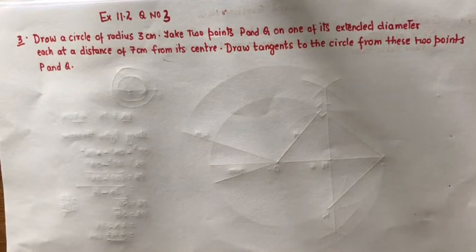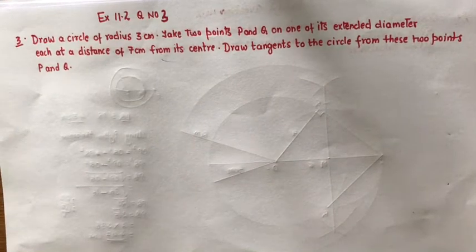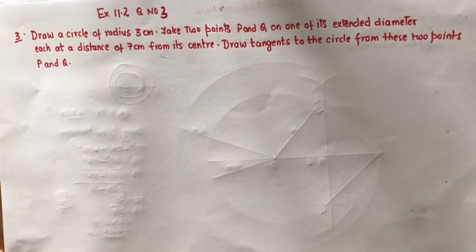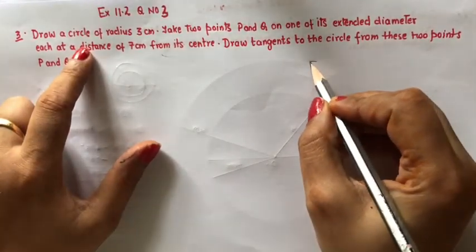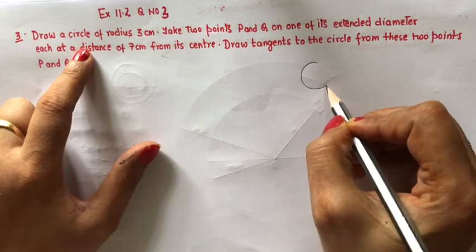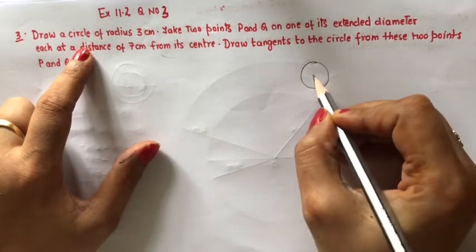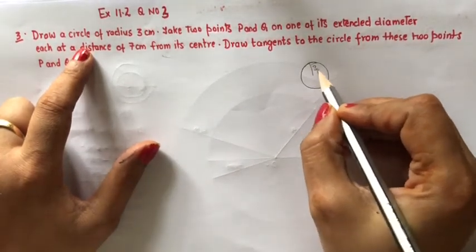So first let me explain what to do in this type of question. What is to be done? You have to draw a circle of radius 3 cm. So first we will draw a circle of radius 3 cm, a circle of radius 3 cm.